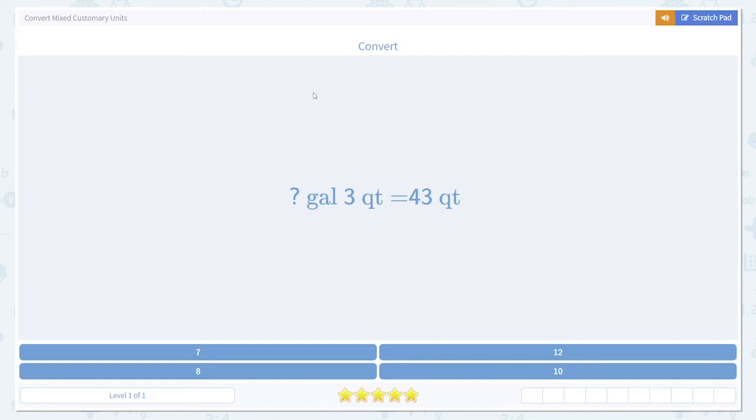Today we're going to learn how to convert mixed customary units. There are two ways to do this. We can either go from big units to small units or small units to big units. Let's look at some examples.